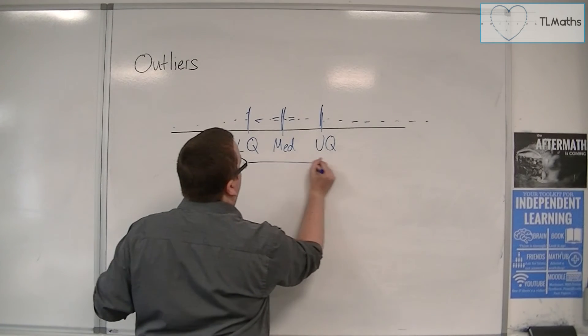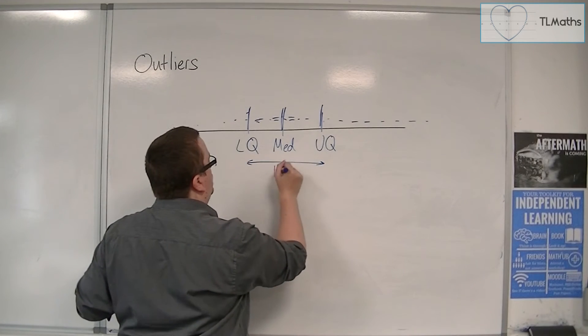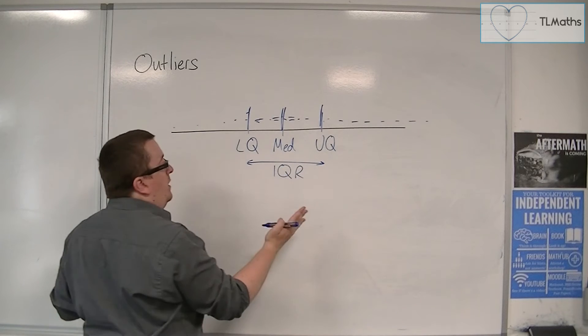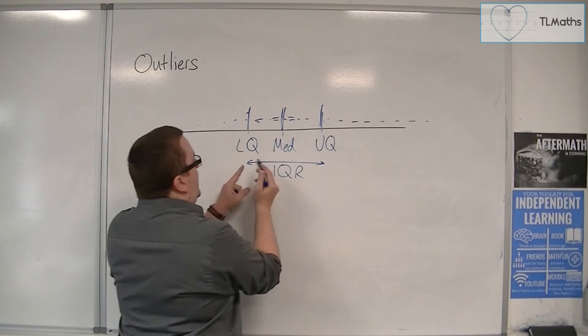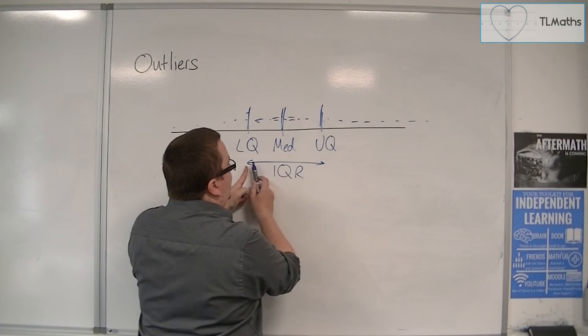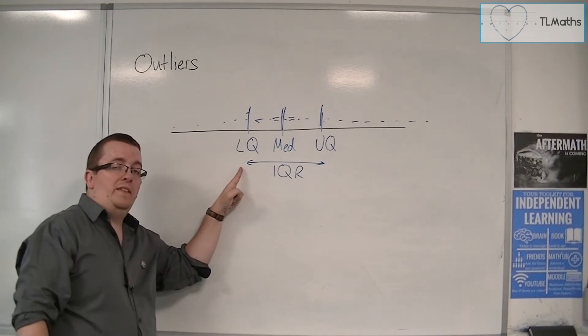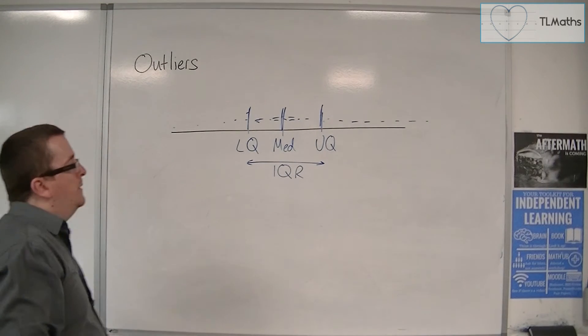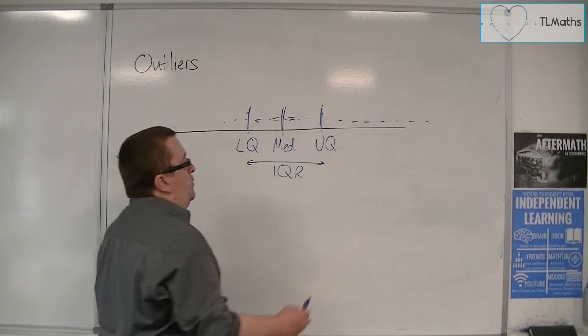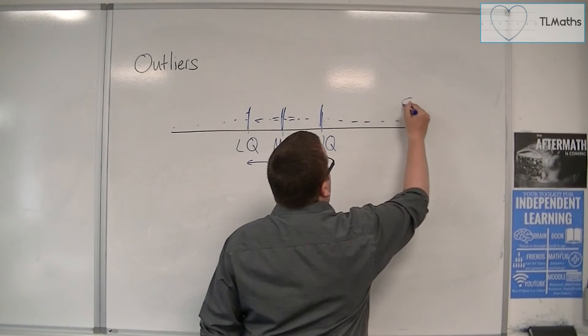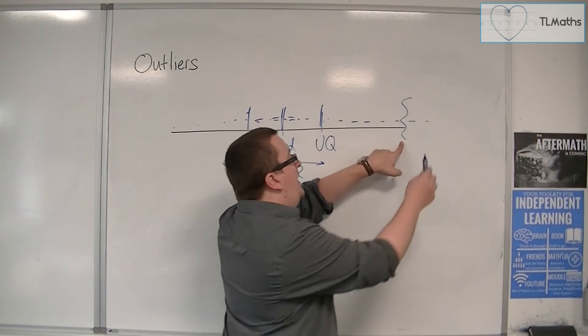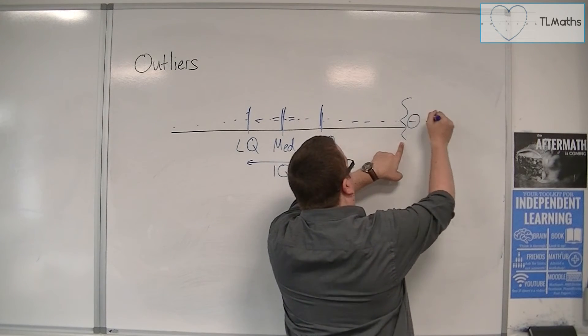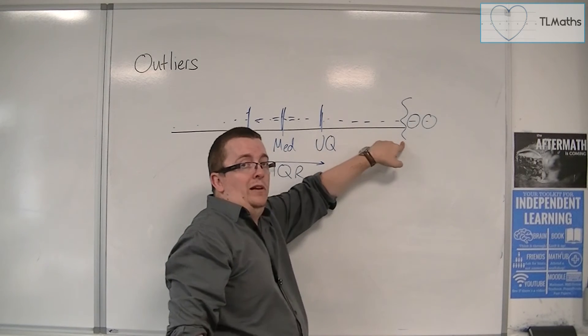We know that we can calculate the interquartile range, the IQR, by having the upper quartile take away the lower quartile. It gives you the distance of that gap between the lower quartile and the upper quartile. So what we do is we say that beyond this point, we will count anything that is outside as an outlier.